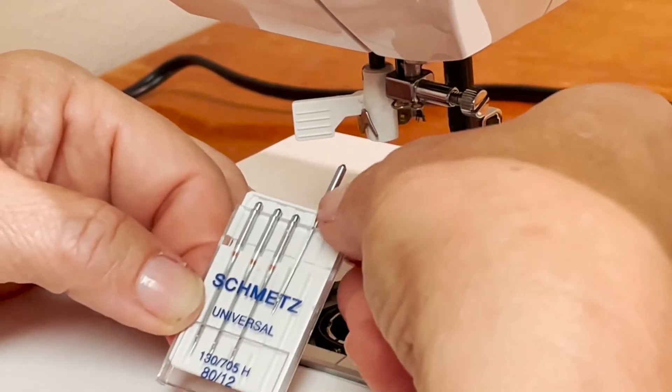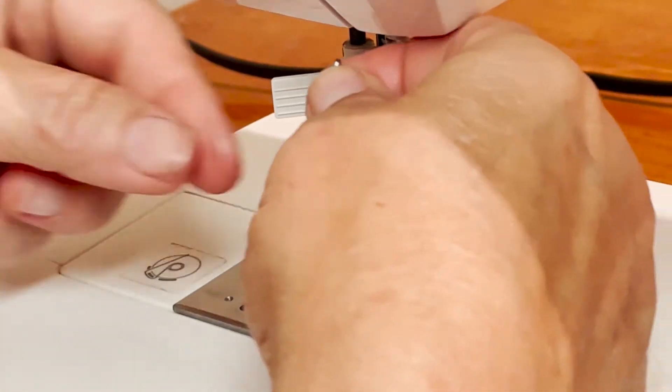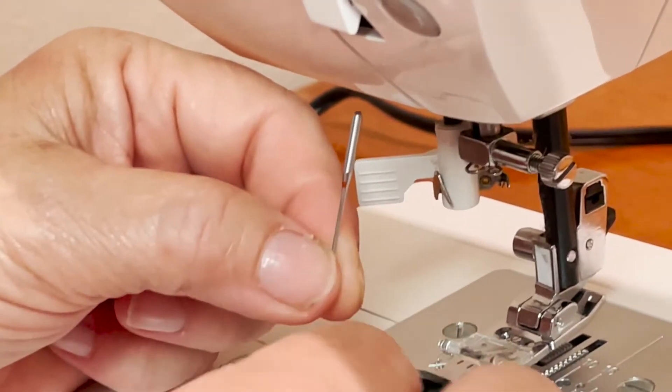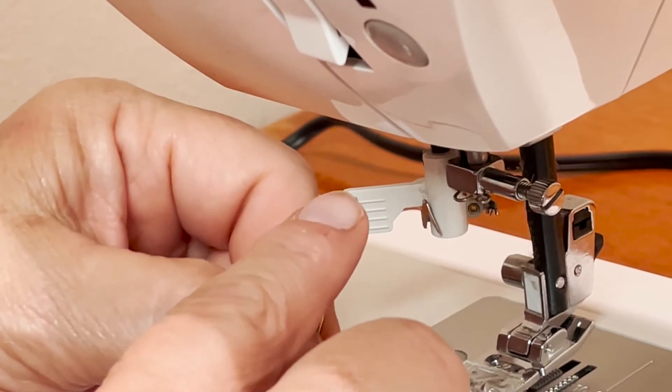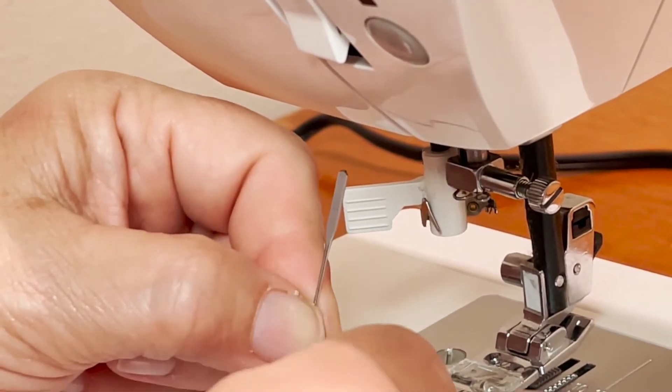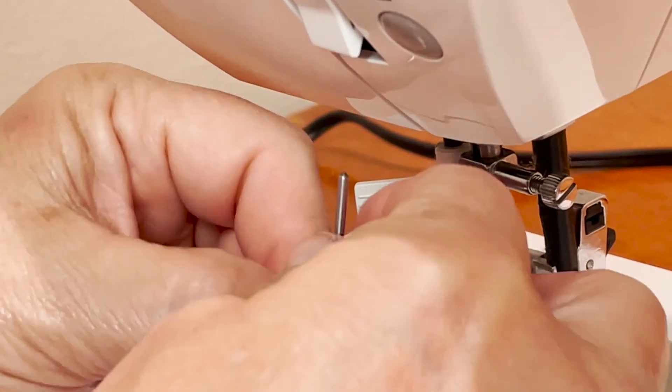If they go down in size, they're for lighter weight fabrics. So we're going to take our needle. When you have your needle, it's round on one side and flat on the other. When we put our needle in our machine, we want the flat side to the back of our machine.